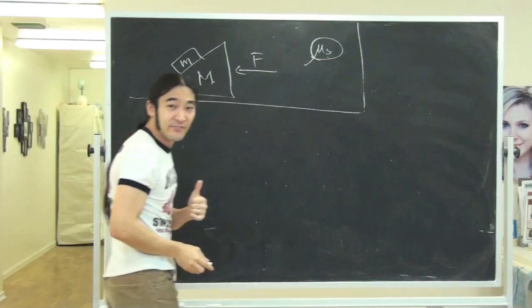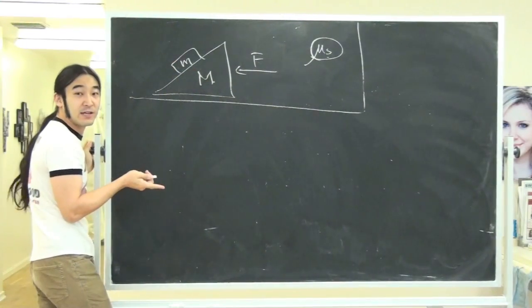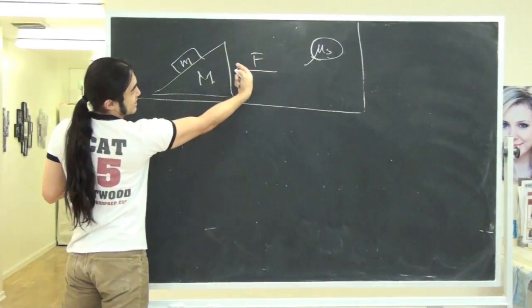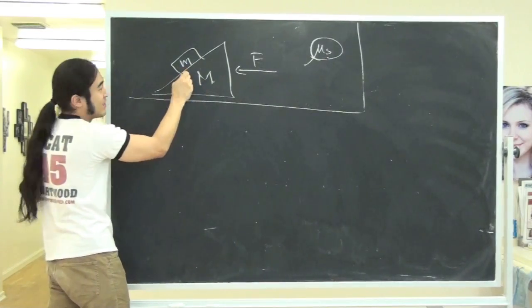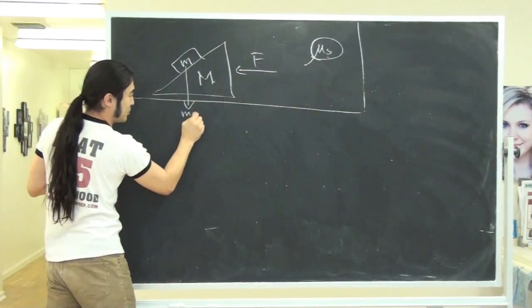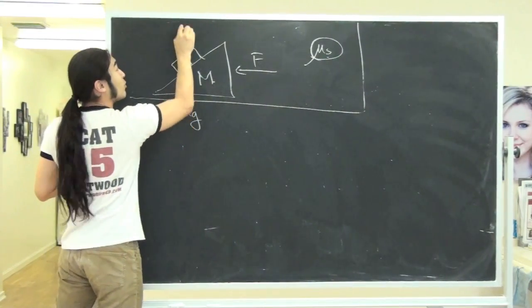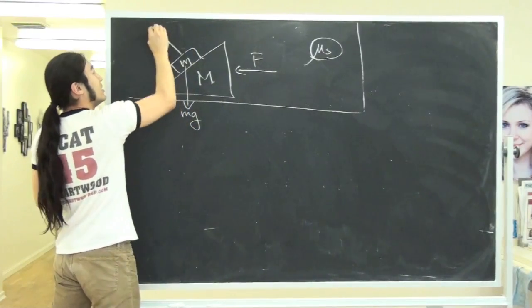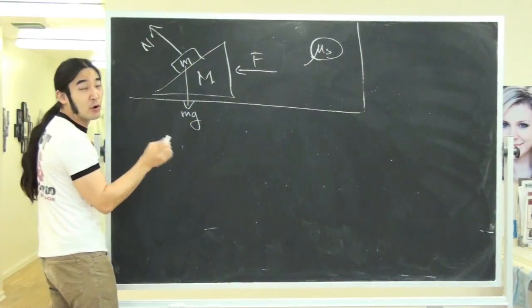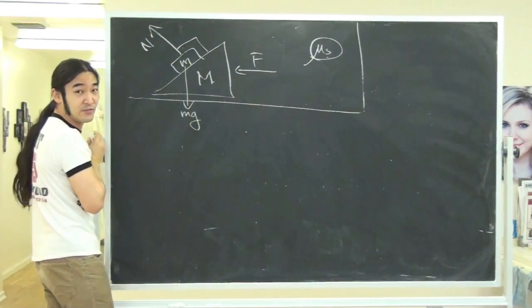Even before I do anything fancy, let's look at this setup and see what the force diagram is going to look like. So pushing this guy to the left, then if you look at this mass, I've got gravity pulling him down. I've got some normal force pushing off this way. Remember normal force is always perpendicular to the surface.